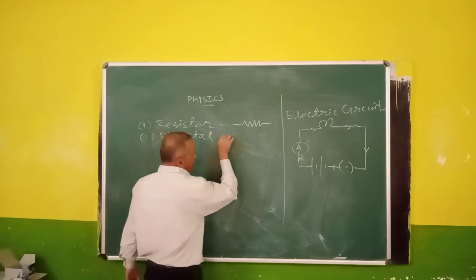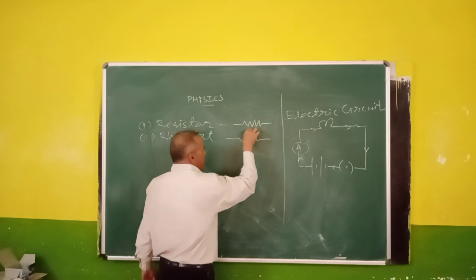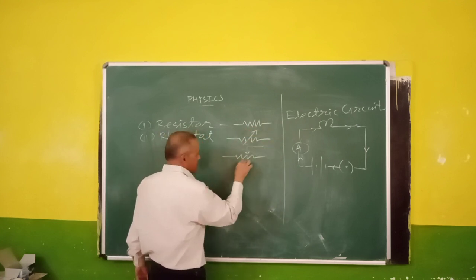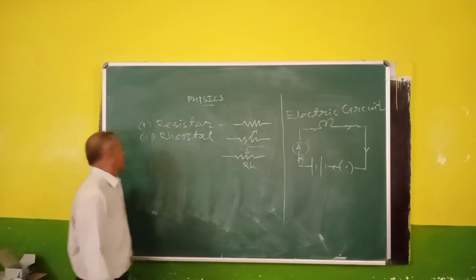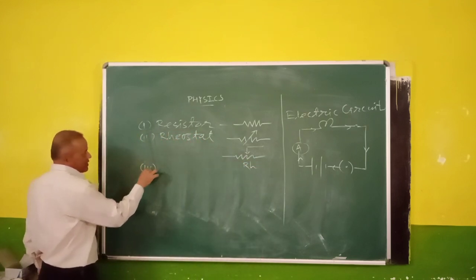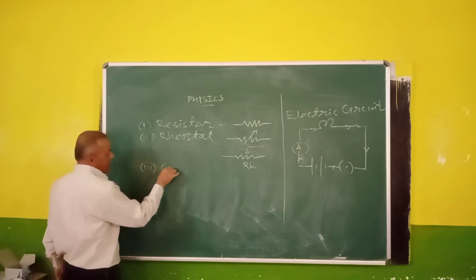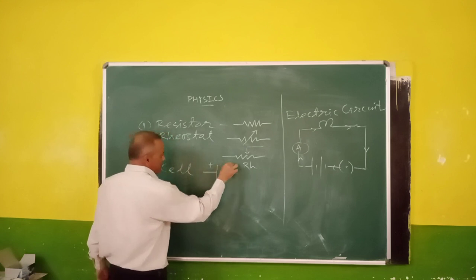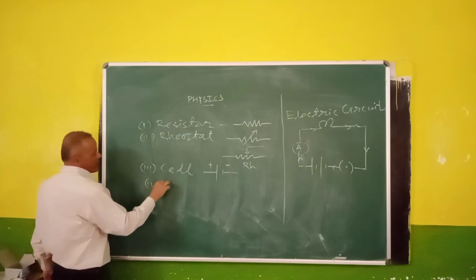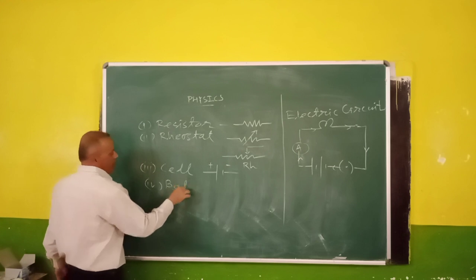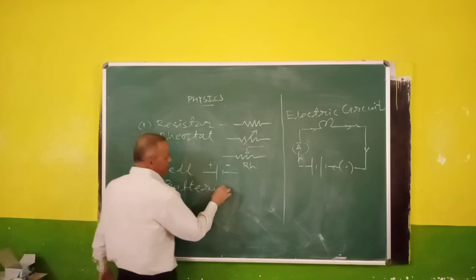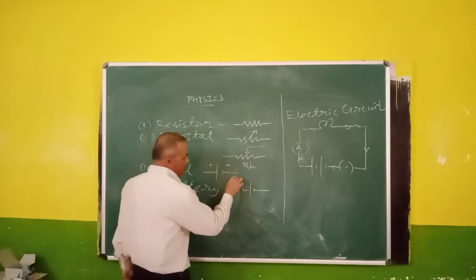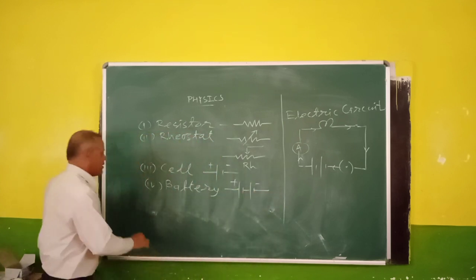The second symbol is for electric bulb, also known as a lamp or light bulb. The next symbol used in electrical circuits is the cell. This is the symbol for the cell — the longer line is positive and the shorter line is negative. The next one is the battery, which is a combination of cells. Whenever two or more cells are connected in series, that combination is called a battery.